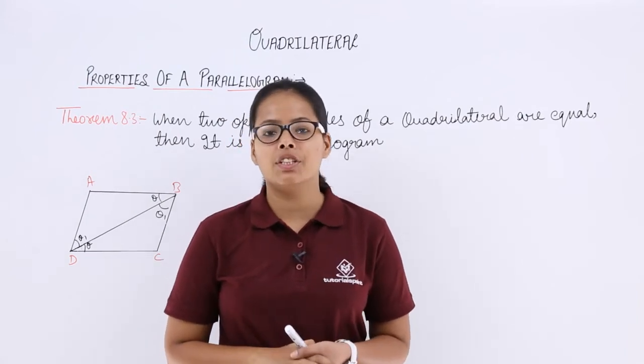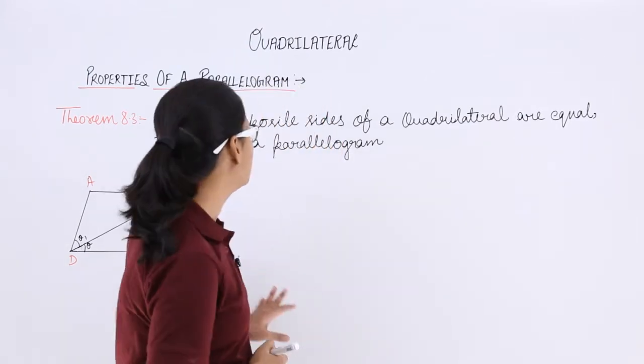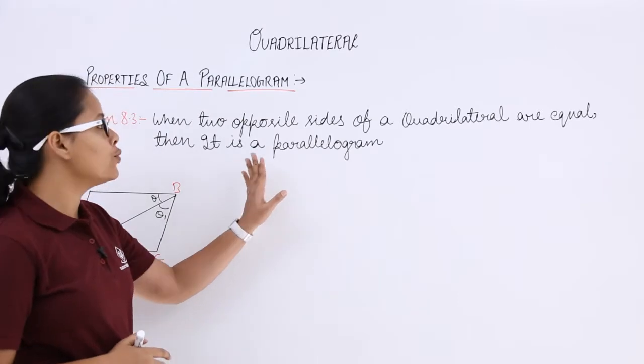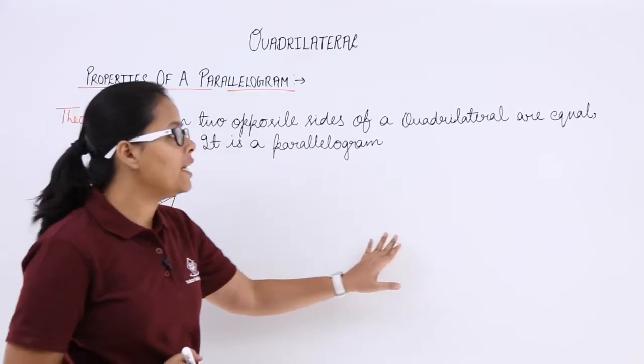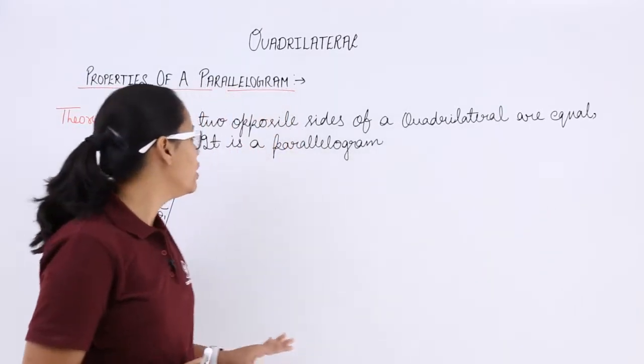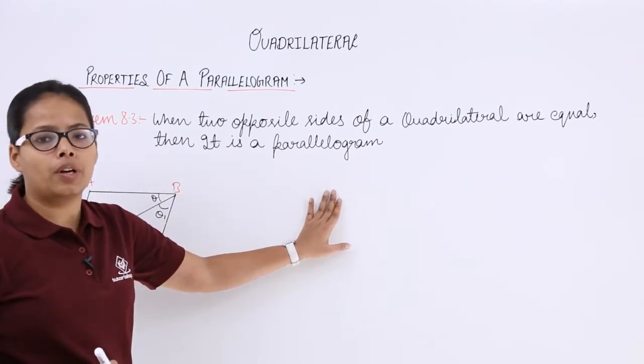Hello guys, let's take another theorem, theorem 8.3 which says when two opposite sides of a quadrilateral are equal, then it is a parallelogram.